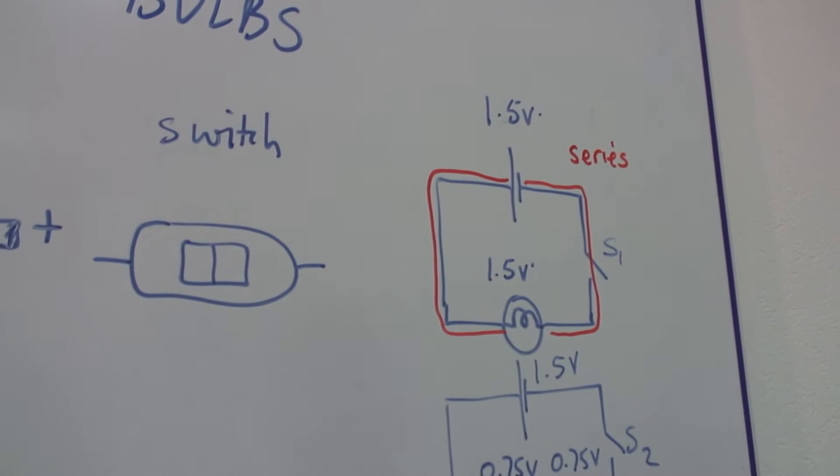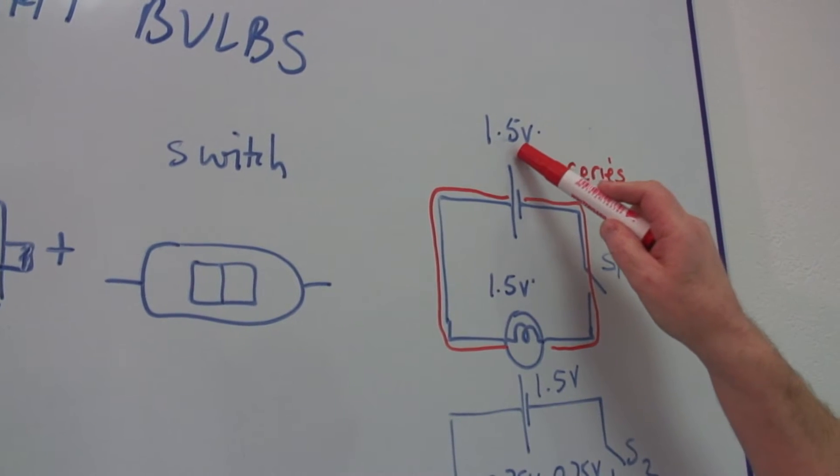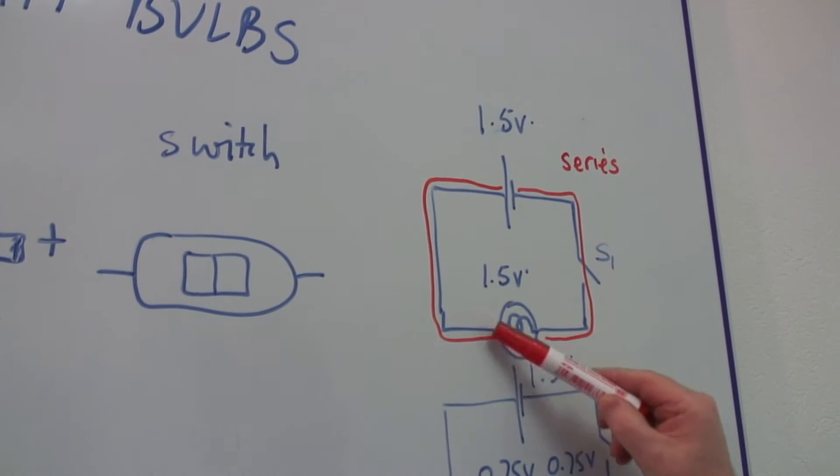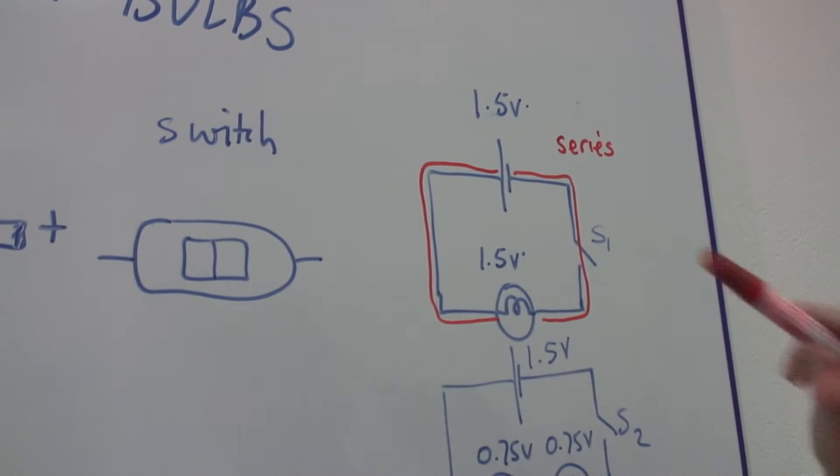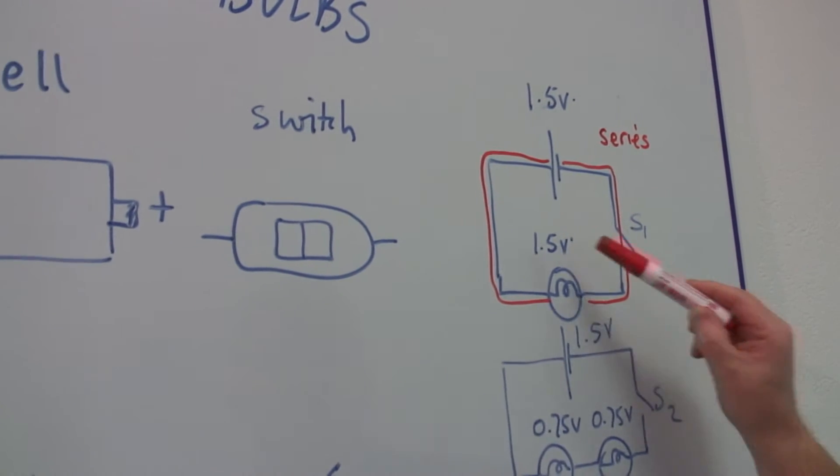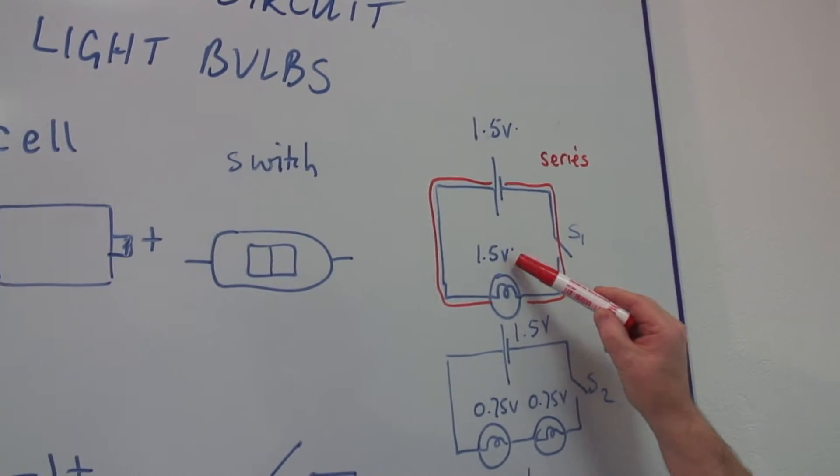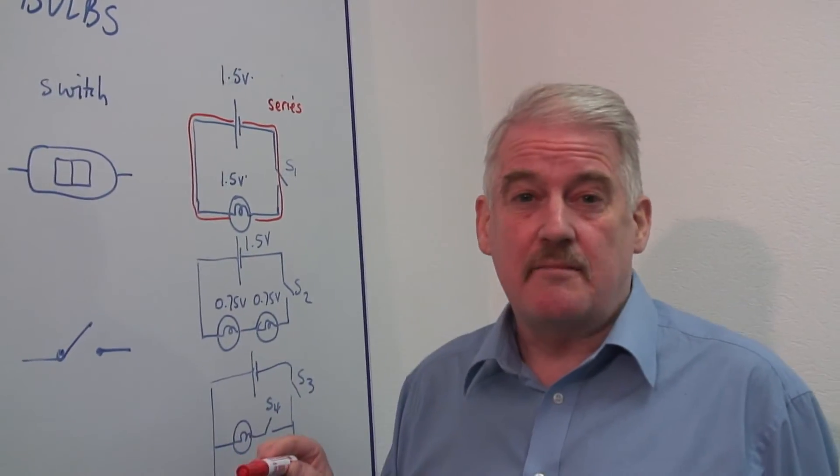One thing to remember is if my cell has a voltage of 1.5 volts, as they usually do, these small cells, then this lamp has also to have a 1.5 volt rating. This means that if you select a lamp which has a 12 volt rating, it will not be very bright. It will be quite dim.